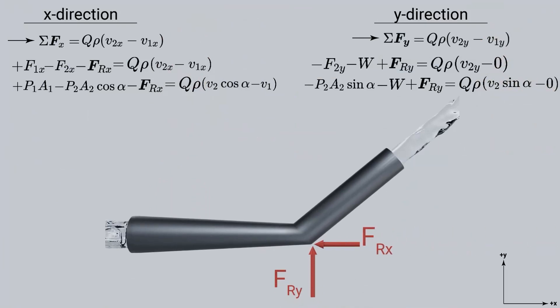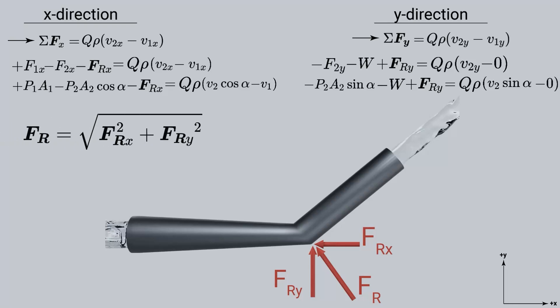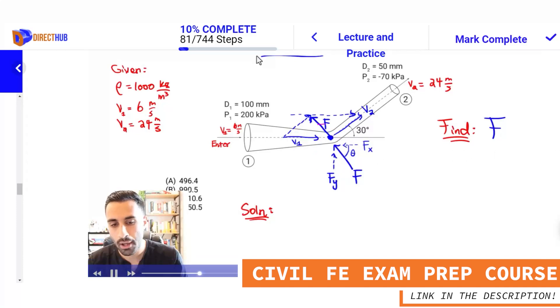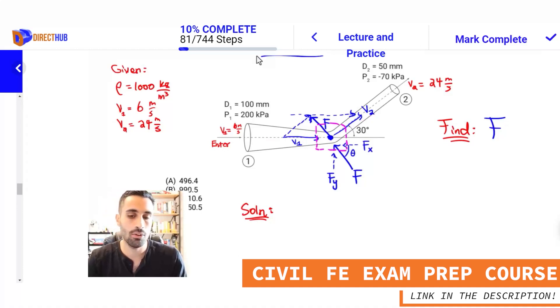With these equations, we can plug in any given values to find the resulting force in x and the resulting force in y acting on the bend. We then determine the total magnitude of the resulting force using the standard resultant equation, and lastly determine the angle theta at which this resulting force acts using right-angle trigonometry. If you're looking to put what we just learned into practice, join me in my Civil PE prep course where we solve relevant PE-type problems.